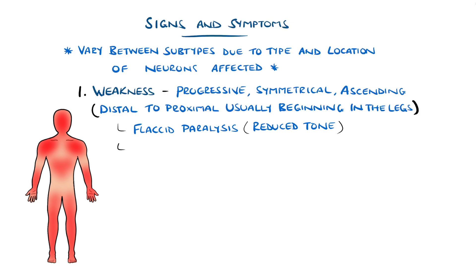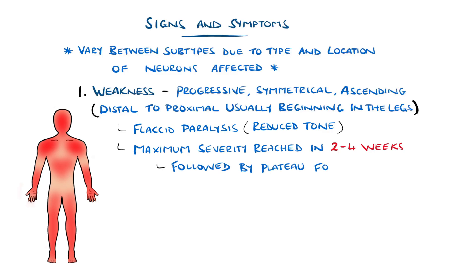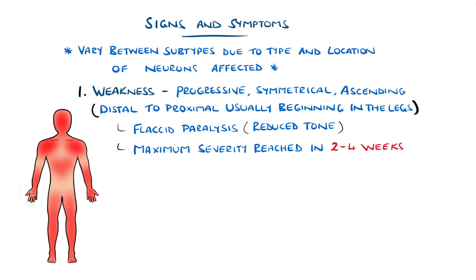Most cases reach maximum severity within two weeks, and progression of weakness beyond four weeks is more consistent with a chronic demyelinating process. Following this stage is a plateau, usually lasting several weeks, before symptoms begin to resolve. The facial muscles can also be affected, and this is the most common cause of acute flaccid paralysis in children.